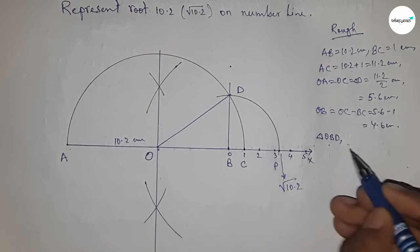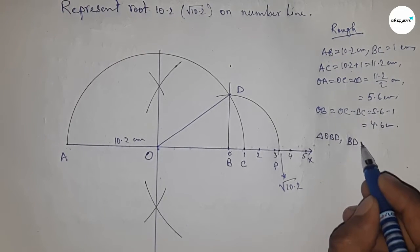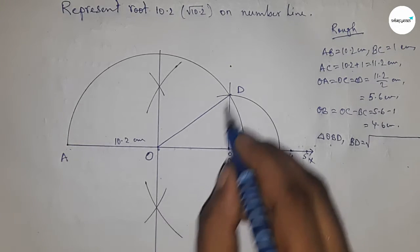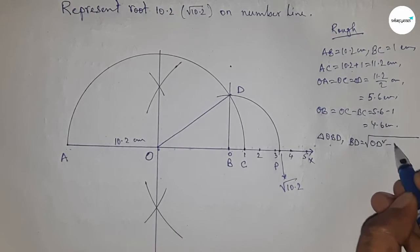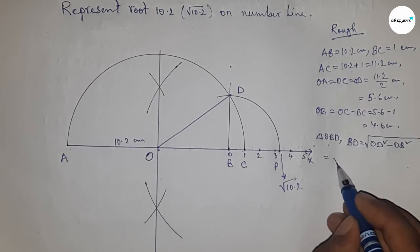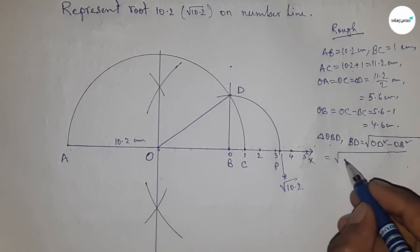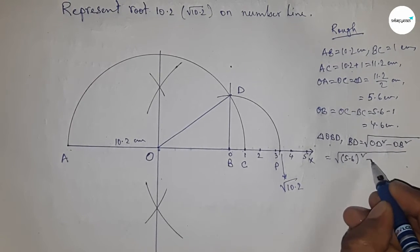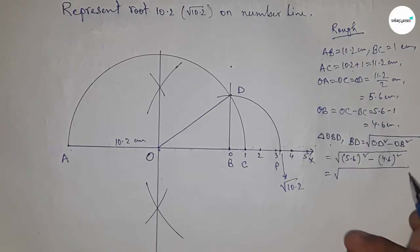From right angle triangle OBD, we can write BD equals, by Pythagoras theorem, OD squared minus OB squared (hypotenuse squared minus base squared). Now put the values of OD and OB.